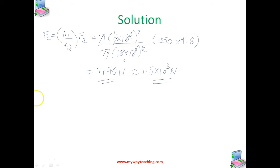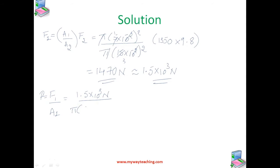Now we find the air pressure that will produce this force. Pressure P = F1 / A1, where F1 = 1.5 × 10³ N and A1 = πR² with R = 5 cm. Simplifying, we get P = 1.9 × 10⁵ Pascal. This is almost double the atmospheric pressure.